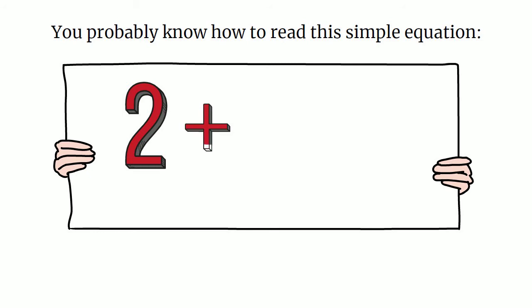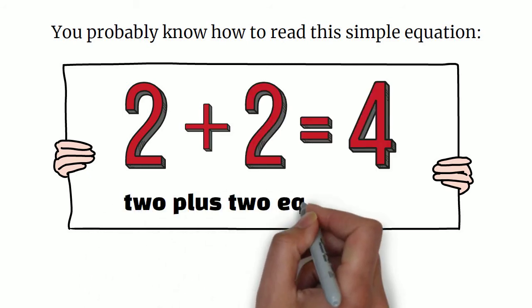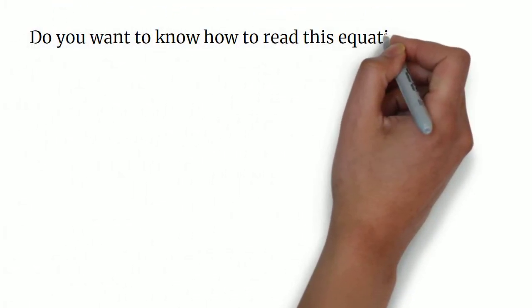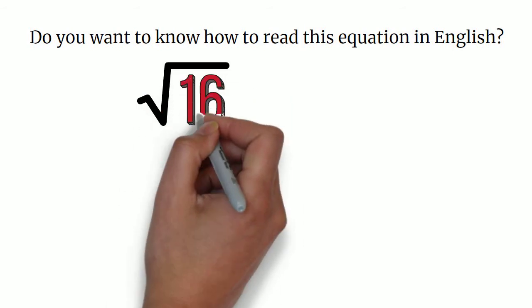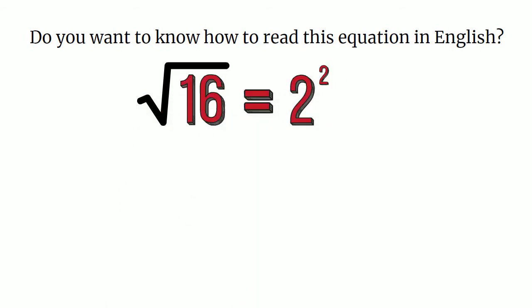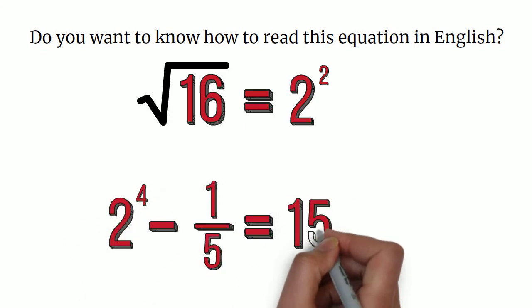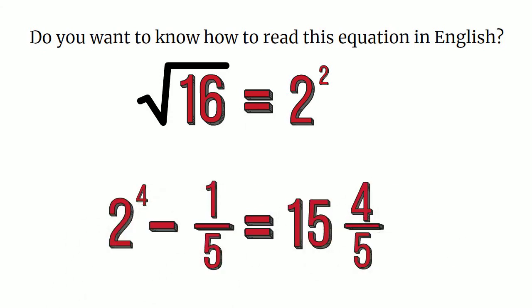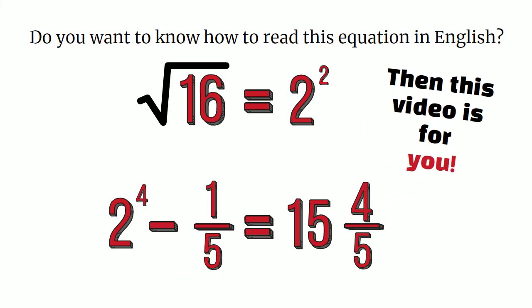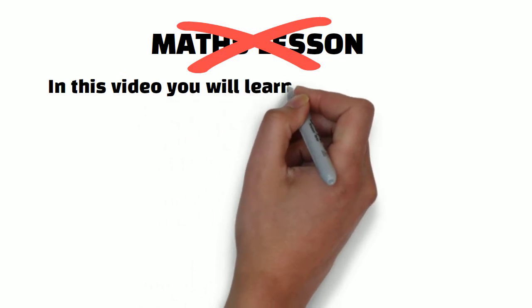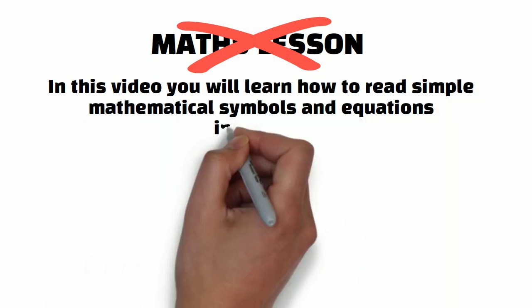You probably know how to read this simple equation — it's 2 plus 2 equals 4. However, do you want to know how to read more complex equations in English? If you do, then this video is for you. Please note that this is not a maths lesson; in this video you will learn how to read simple mathematical symbols and equations in English.